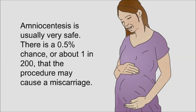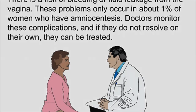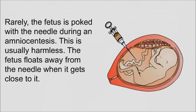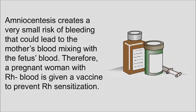Amniocentesis is usually very safe. There is a 0.5% chance — about 1 in 200 — that the procedure may cause a miscarriage. There is a risk of bleeding or fluid leakage from the vagina, occurring in about 1% of women. Rarely, the fetus is poked with the needle, but this is usually harmless as the fetus floats away from the needle when it gets close. Amniocentesis also creates a very small risk of the mother's blood mixing with the fetus's blood, so a pregnant woman with Rh blood is given a vaccine to prevent Rh sensitization.